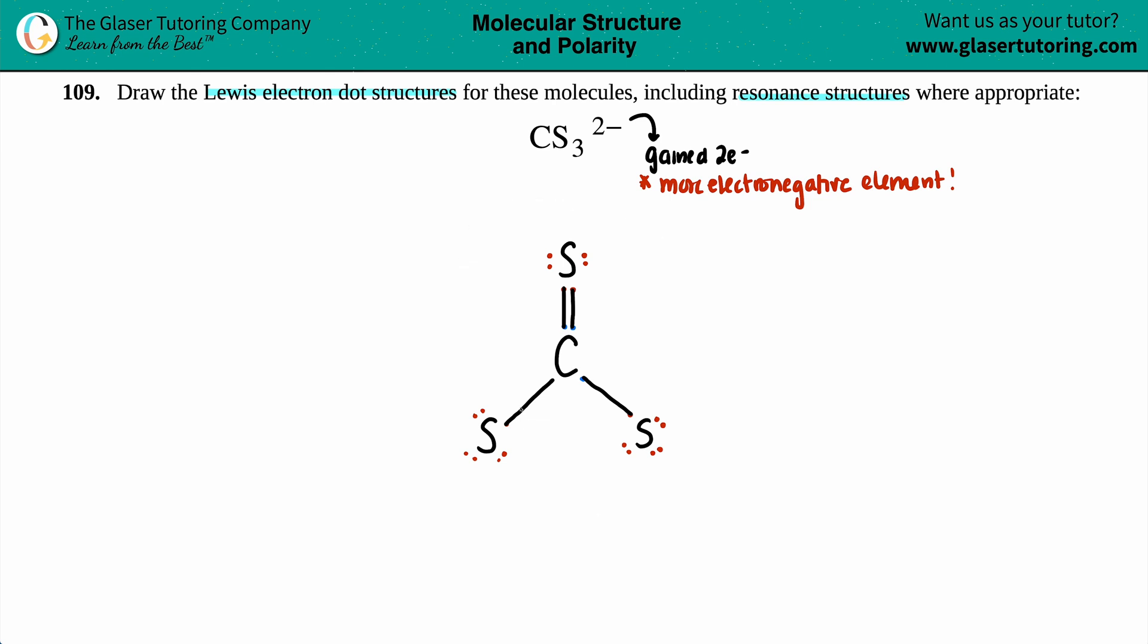So this is the electron dot structure. But since we have a charge, I do have to draw brackets. And just put the charge in the upper right-hand corner. Whether you want to say two minus or minus two, it doesn't really matter.